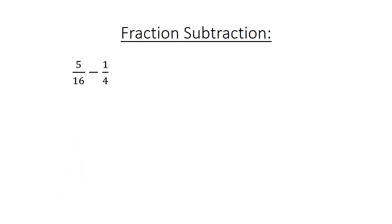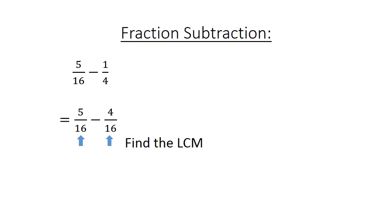Fraction subtraction: 5 over 16 minus 1 over 4. Find the lowest common multiple: 5 over 16 minus 4 over 16 equals 1 over 16.